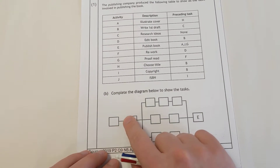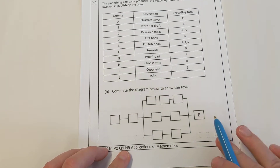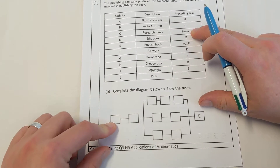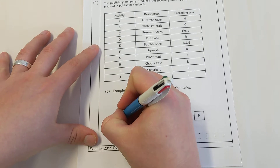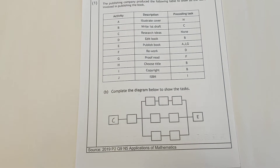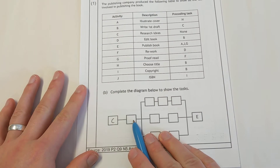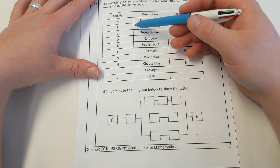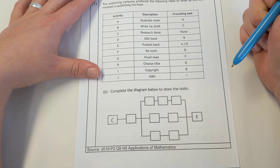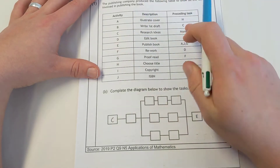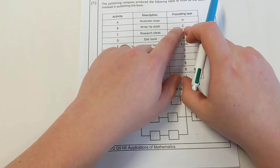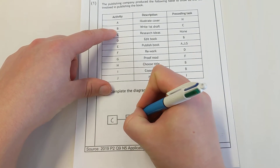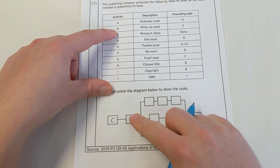So if one of your activities has nothing preceding it, that means it goes at the start — that's the first thing to do. In each of these boxes, we write the letter for the activity. The only one here with no preceding tasks, the one that goes first, is activity C. So that activity goes first. To see what activity comes next, we look for which task has C as its preceding one — and activity B has that, so B comes next.